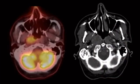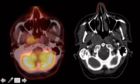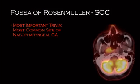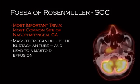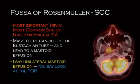The fossa of Rosenmuller is the most common location for nasopharyngeal cancer. If you're ever wondering where the nasopharynx is — find the nose and look behind it. That's the nasopharynx. The fossa of Rosenmuller is important because it's the most common site of nasopharyngeal cancers, and it will block the eustachian tube and lead to an effusion. So unilateral mastoid effusions — look at the fossa of Rosenmuller.